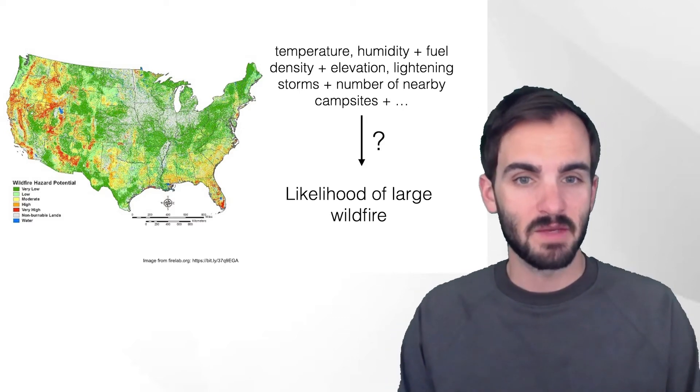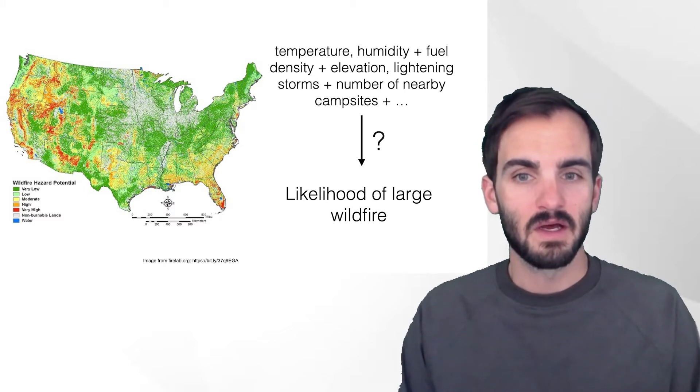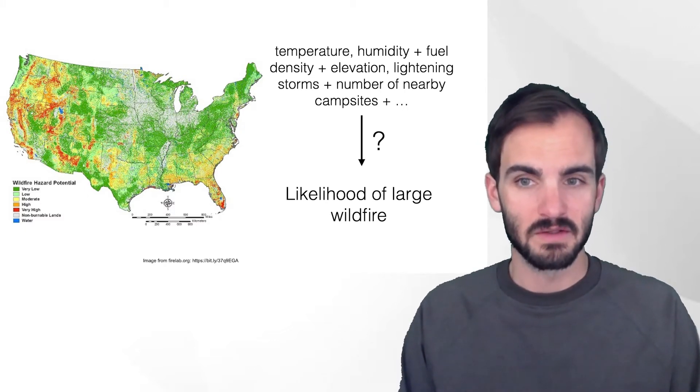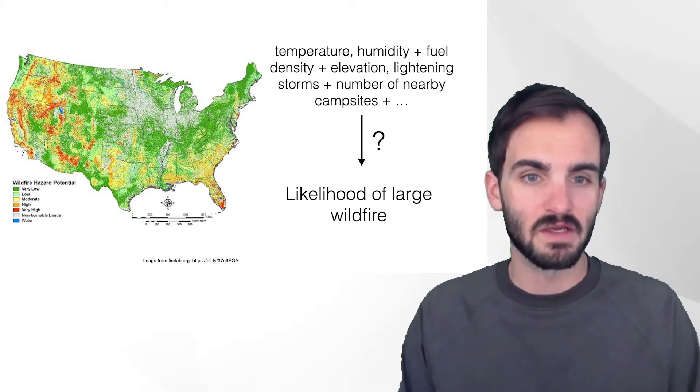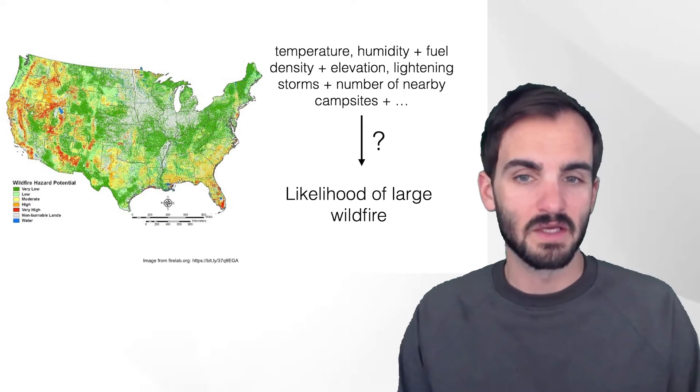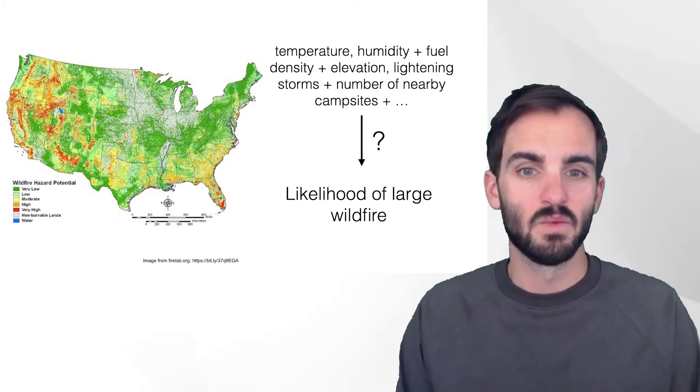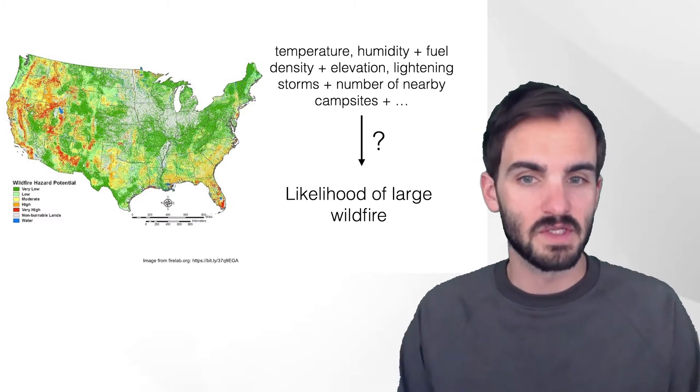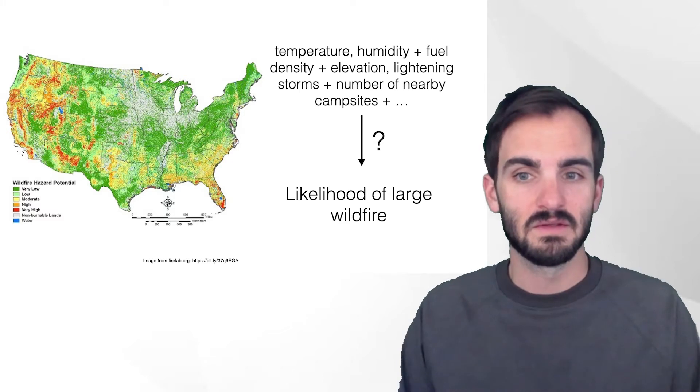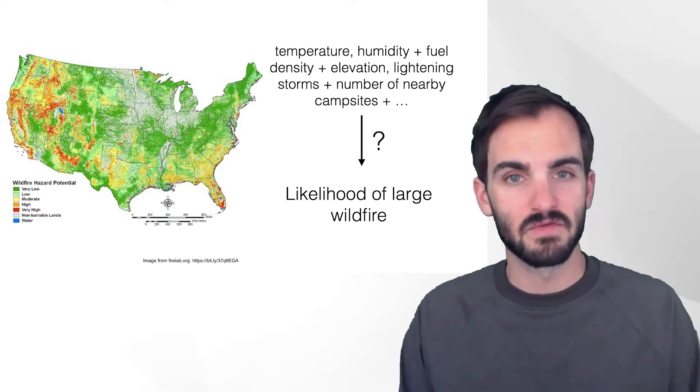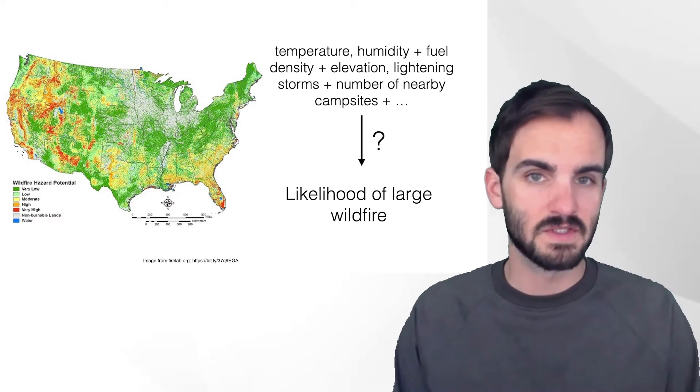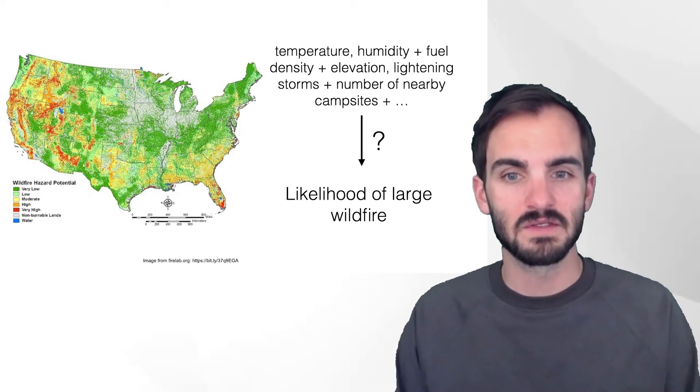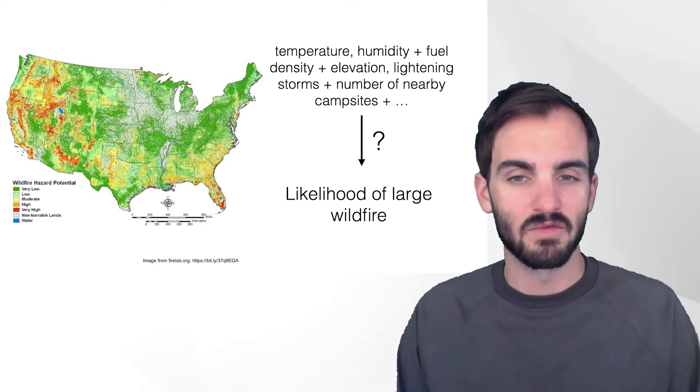Now, if we think back to our example of wildfire modeling, the output of the statistical model might be whether or not a wildfire of significant size, say greater than 1000 acres, ignites in a particular location. And the inputs might be things like temperature, humidity, wind speed, fuel or tree density, elevation, likelihood of lightning, number of nearby campsites if we think that some wildfires are caused by humans camping out in the forest, and maybe many, many other input variables.